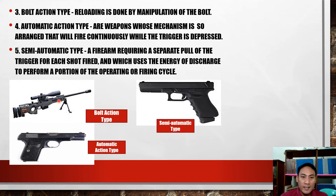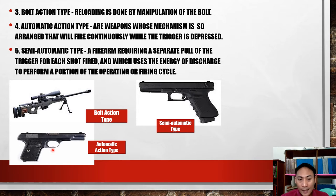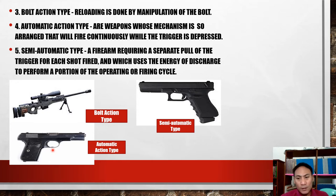Automatic action type: the weapon uses a mechanism arranged to fire continuously while the trigger is depressed. So as long as the trigger is pressed, it fires continuously in a burst. Once you release the trigger, it stops. That is automatic — one press of the trigger and it fires continuously as long as the trigger remains depressed.